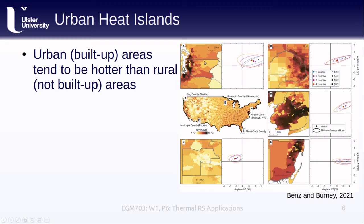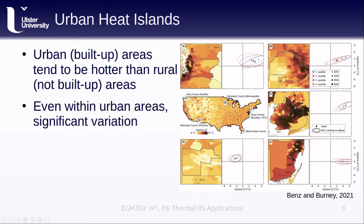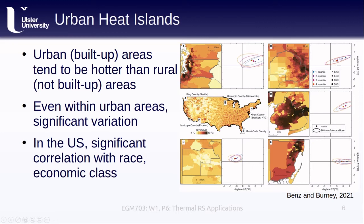Because urban areas are not all the same, there can be significant variation even within the same city. What this paper showed is that in the United States, there was a significant correlation between the most extreme urban heat islands and the race and economic class of the people that live there. In general, the poorest areas or those with the highest number of minority residents tended to be much hotter than wealthier areas or areas with a larger share of white residents. This has significant consequences for public health, and is something we'll look at in this week's practical and the subsequent class project.